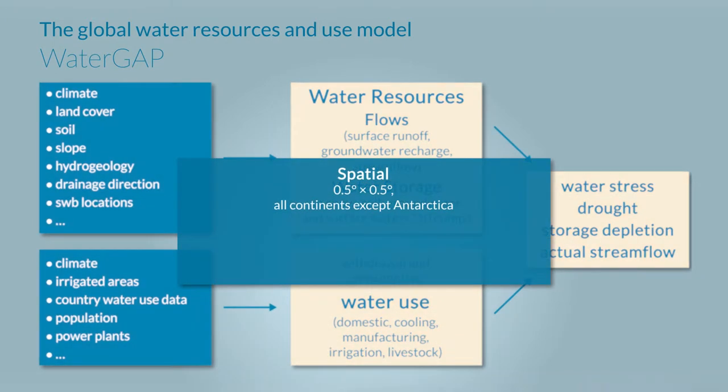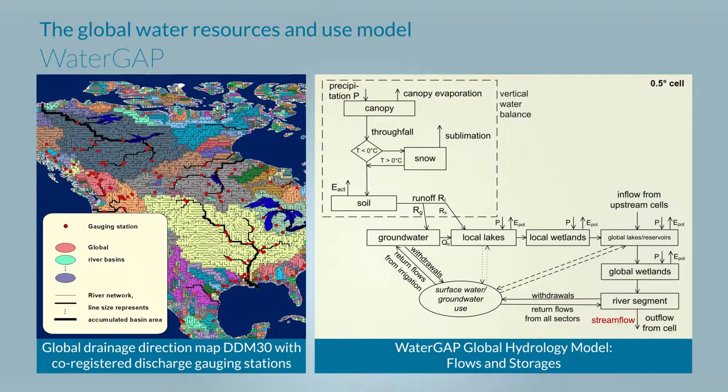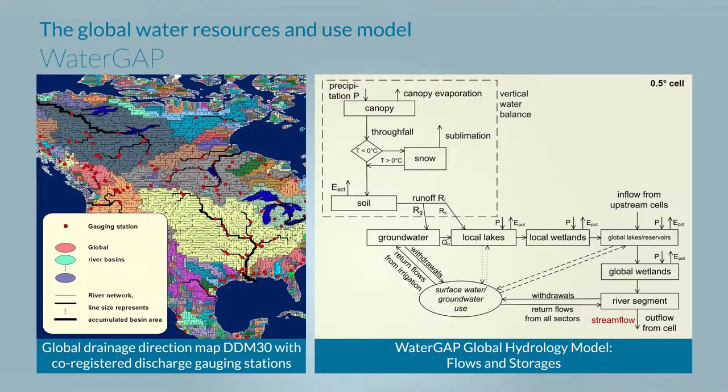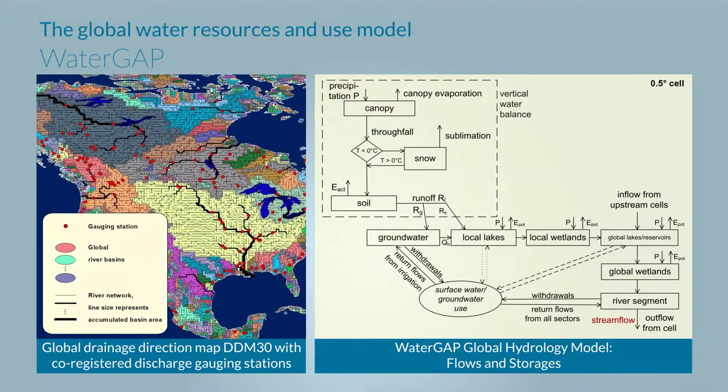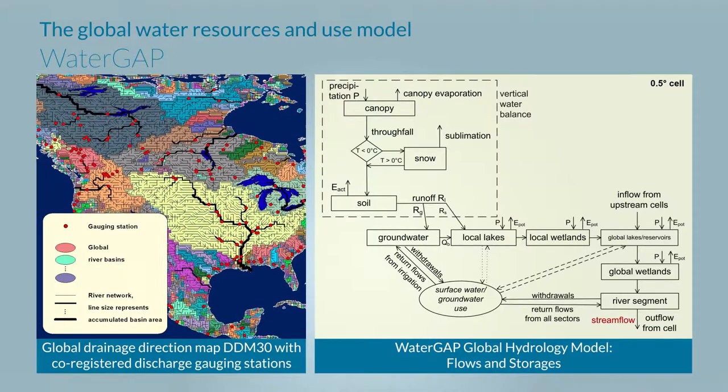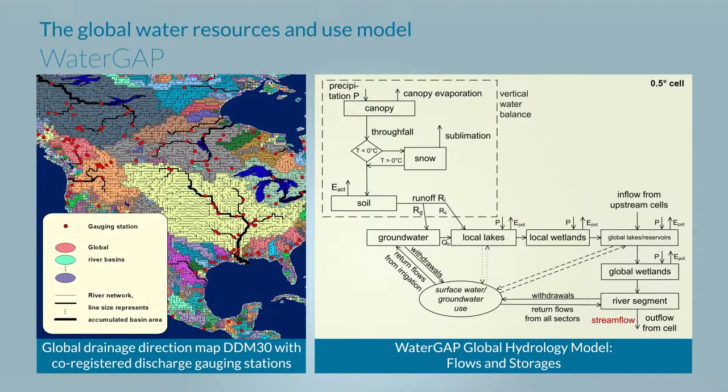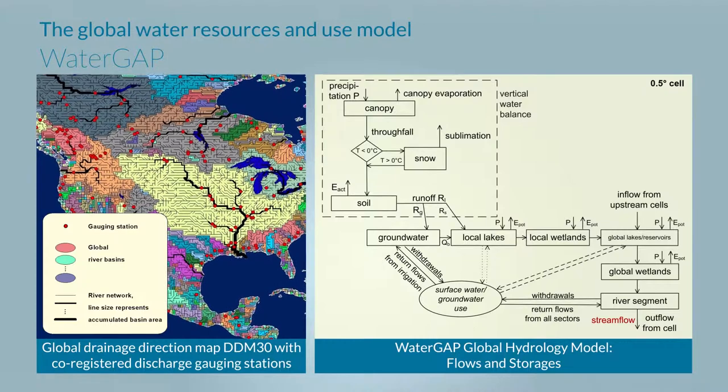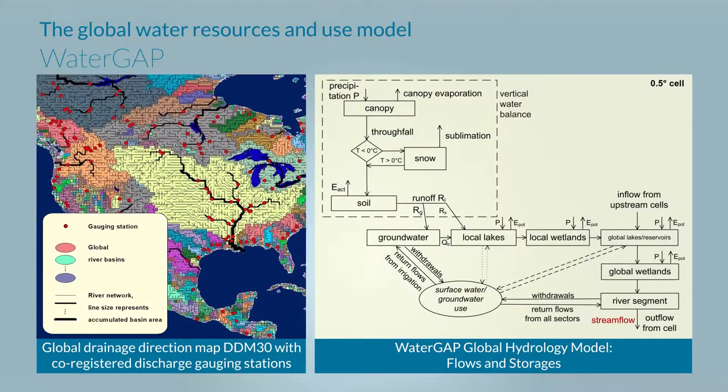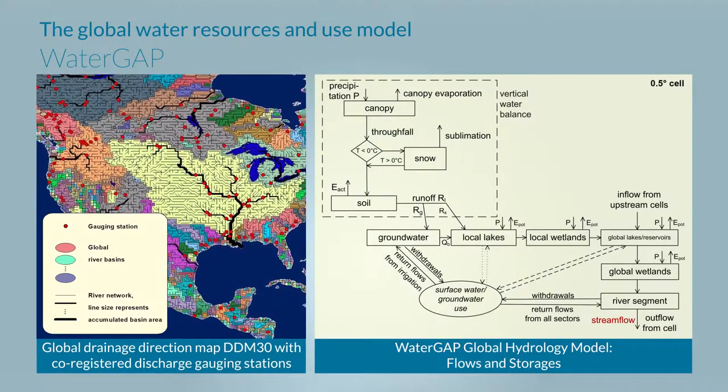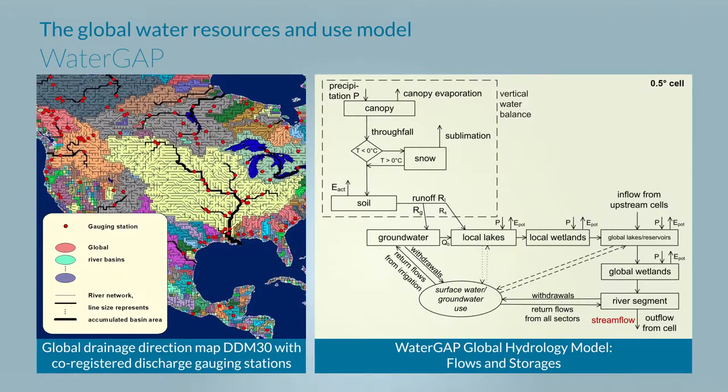WaterGAP produces results at a spatial resolution of half degree that is 55 by 55 kilometers at the equator. This makes altogether 67,000 grid cells and for each of these grid cells WaterGAP estimates streamflow every day in a certain time period but also other fluxes like groundwater recharge and it also estimates water storage in the soils, in the groundwater and in other water bodies like surface water bodies.